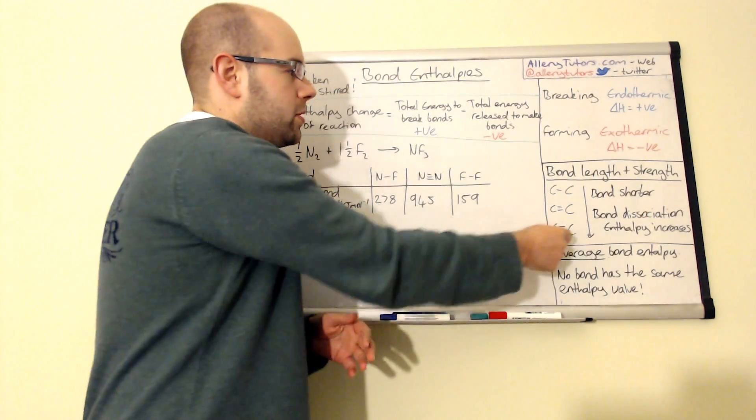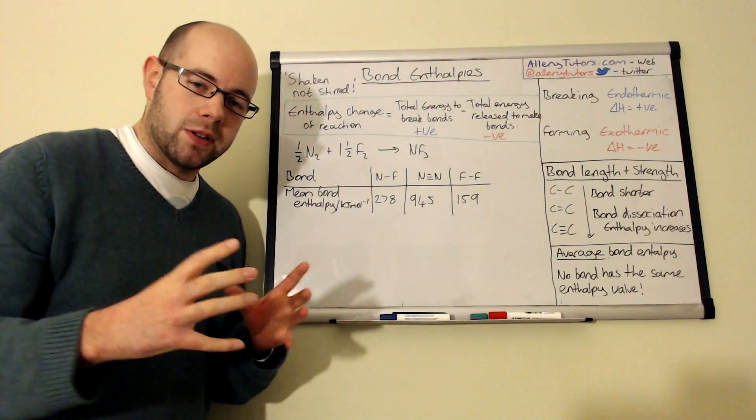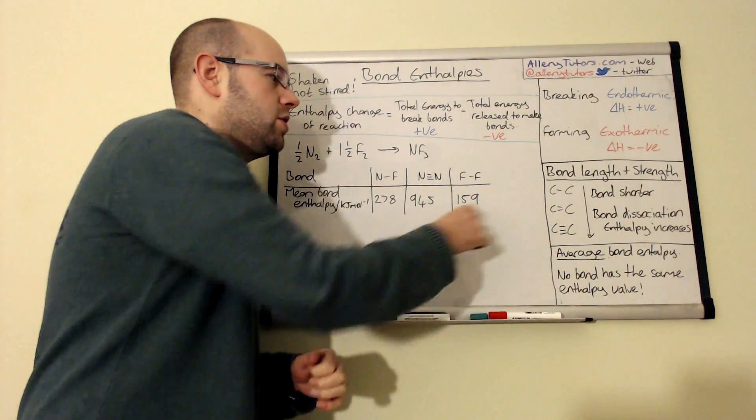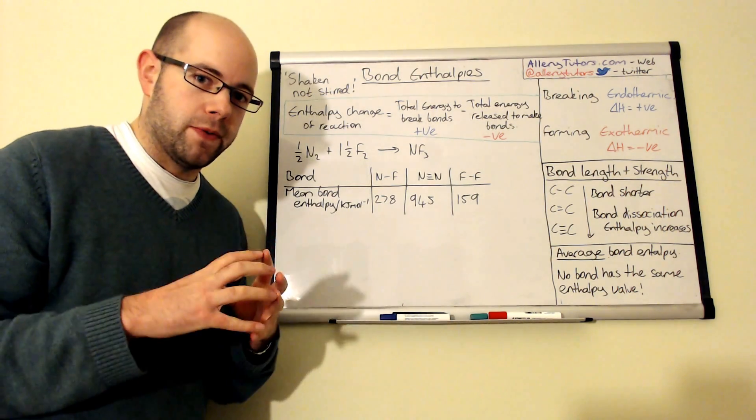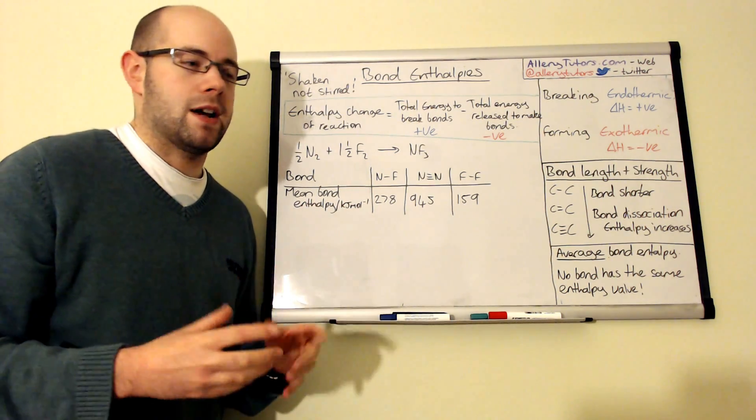So you can see that the bond length gets shorter, and because the bond length is shorter, actually this requires a lot more energy to break them, but also when these bonds are being formed, a lot of energy is actually given out.